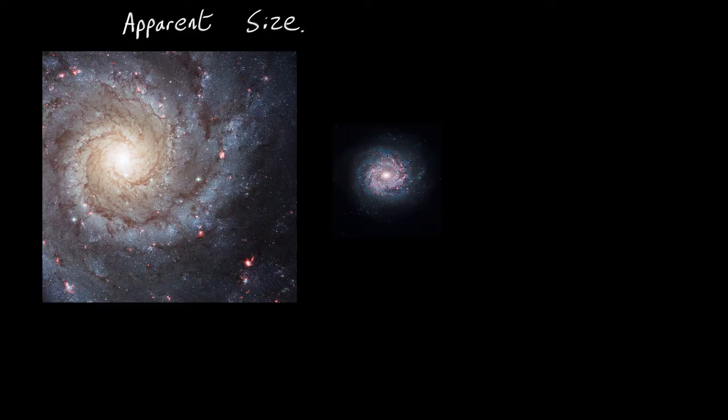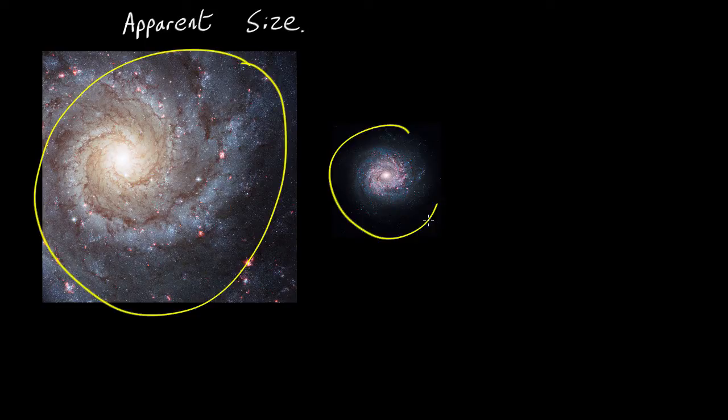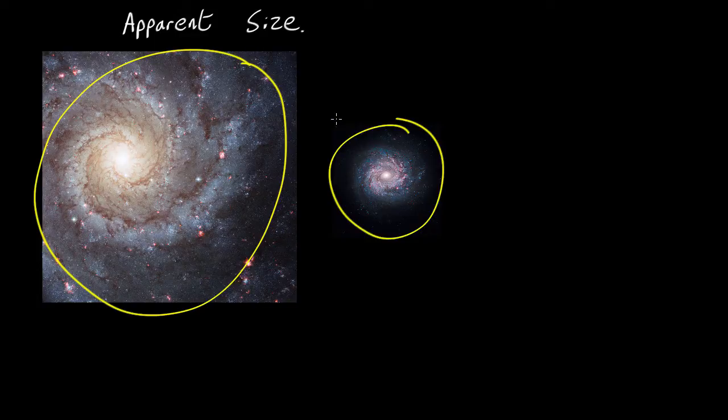So one way to measure how far away something like a galaxy is, is to look at its apparent size. So here we have two galaxy images, a big looking one and a small looking one. Now you'd pretty obviously think that this one is closer than this one over here. You might even be right. So a general principle, things that look bigger are probably closer than things that look far. What's the maths behind this?